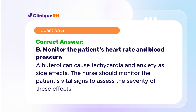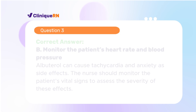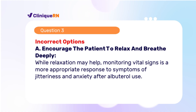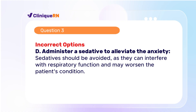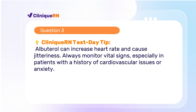The correct answer is B: Monitor the patient's heart rate and blood pressure. Albuterol can cause tachycardia and anxiety as side effects, so the nurse should monitor the patient's vital signs to assess the severity. While relaxation may help, monitoring vital signs is a more appropriate response to symptoms of jitteriness and anxiety after albuterol use. Discontinuing the treatment may not be necessary unless the symptoms are severe or vital signs are abnormal. Sedatives should be avoided as they can interfere with respiratory function and may worsen the patient's condition. Always monitor vital signs, especially in patients with a history of cardiovascular issues or anxiety.